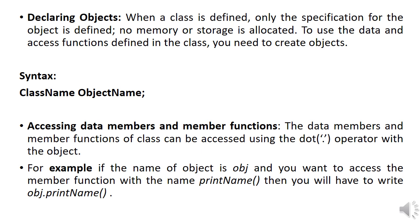When a class is defined, no memory or storage is allocated for that class. To allocate memory you have to create an object of that class. The syntax for creating an object is: class name followed by the object name. Generally, you use the data and access functions defined in the class by creating an object of that class.